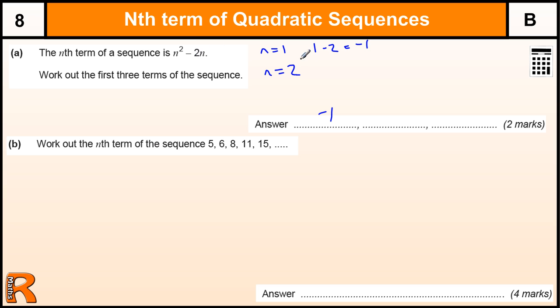When n equals 2, we've got 2 squared, which is 4, minus 2 lots of 2, which is also 4. So that gives us 0.